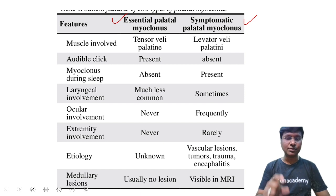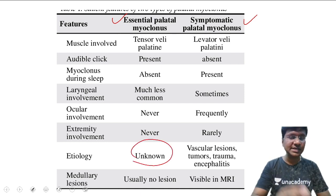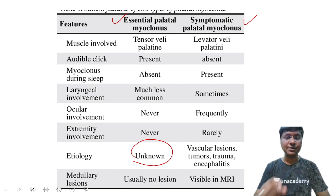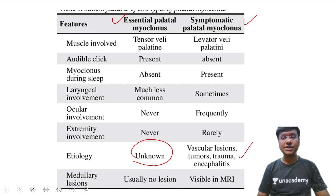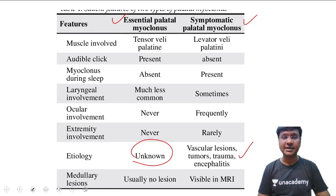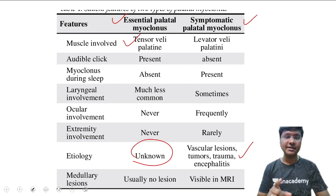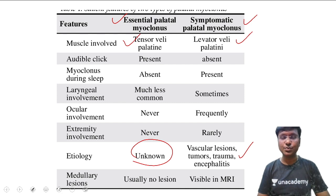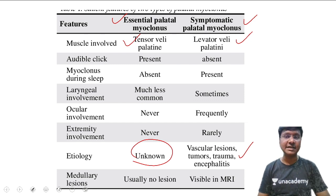In essential palatal myoclonus, the exact cause is not known. For symptomatic palatal myoclonus, etiologies include vascular lesions, tumors, trauma, and encephalitis. Regarding the muscles involved: in essential palatal myoclonus it is the tensor veli palatini, whereas in symptomatic palatal myoclonus it is the levator veli palatini.